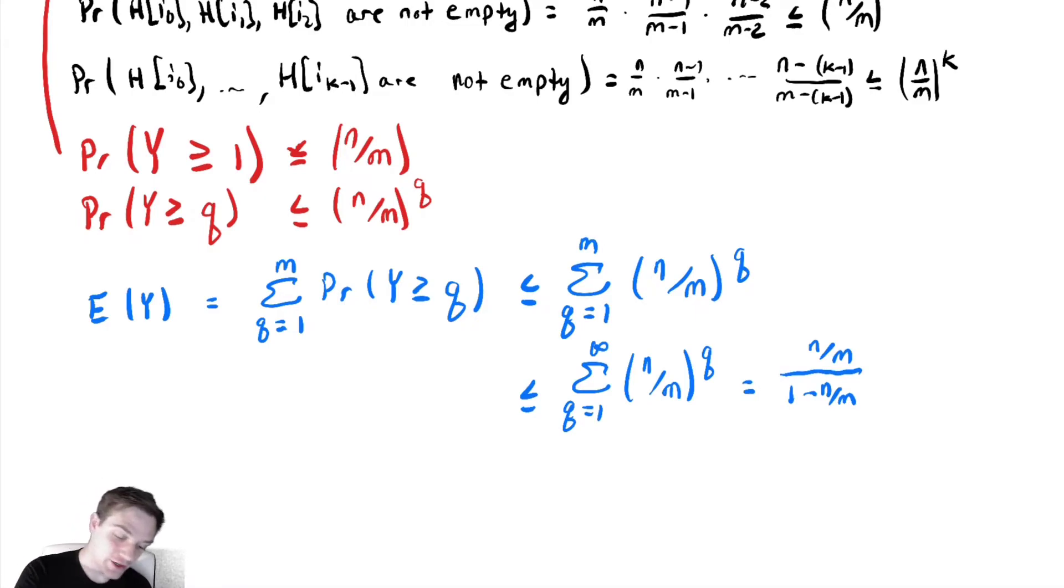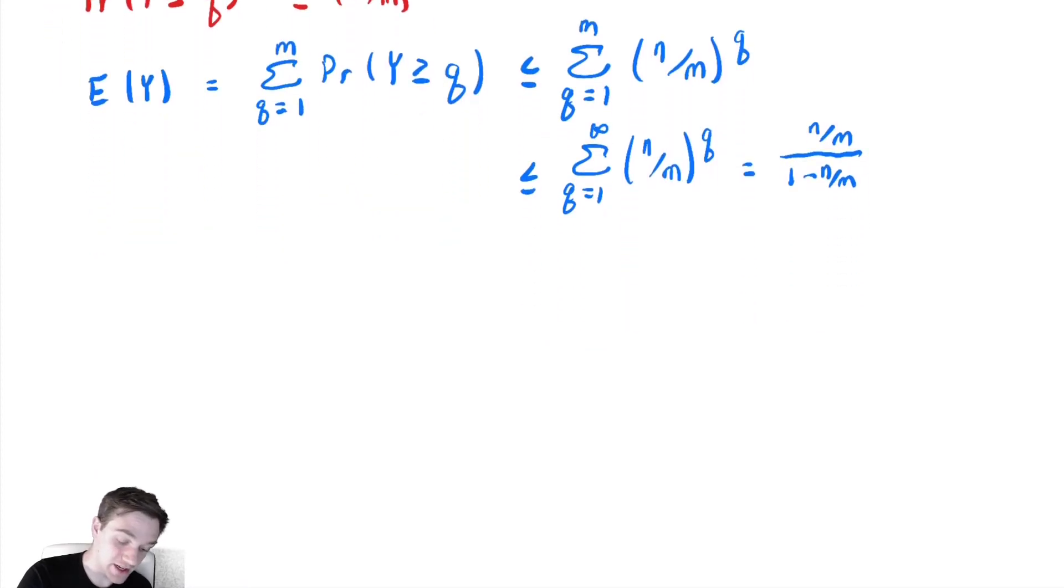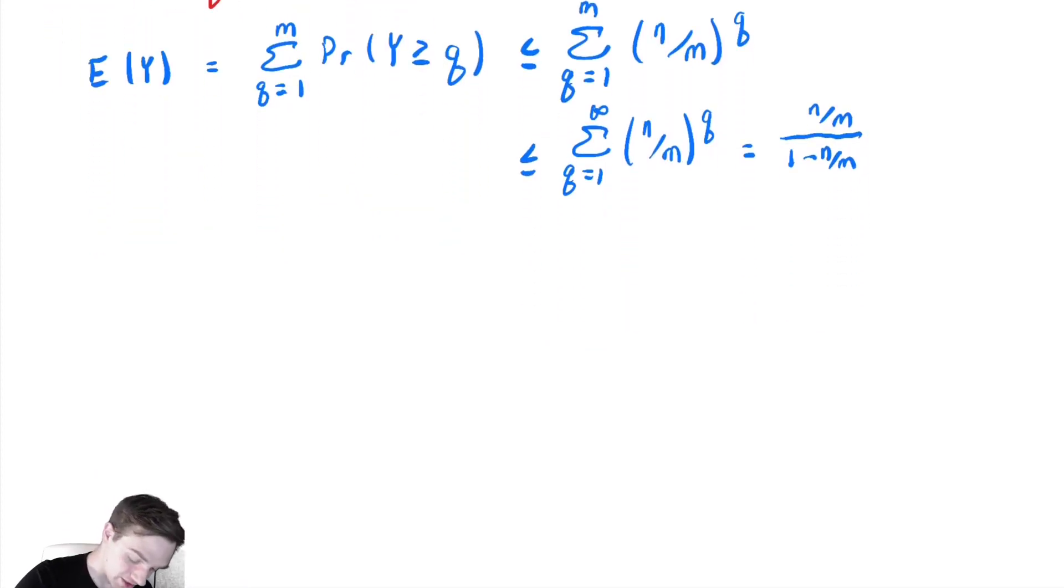For a geometric series not starting at 0, it's the first term over 1 minus the common ratio. The first term is n/m, so we get (n/m)/(1-n/m) = n/(m-n). When I look at this as a complexity, I panic a little. That looks very unhelpful. So we're going to make another assumption.